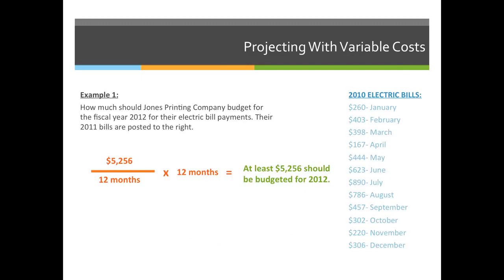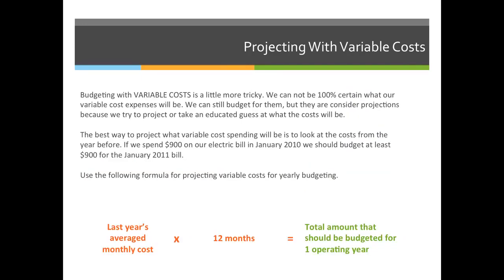So let's go back to our example. The formula will be to average the monthly cost from the year before, multiply it by 12, and we'll get the total amount that we spent the year before for our cost. Sometimes you can just add up last year's totals and say that's how much we're going to spend next year — you don't have to average it and then multiply it by 12.